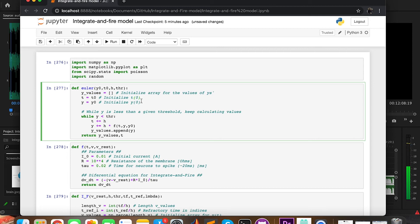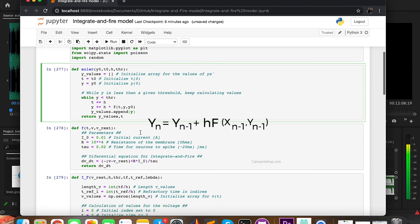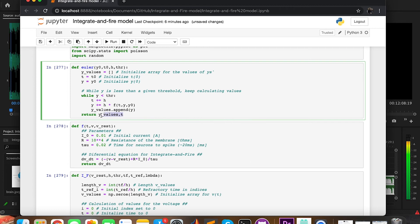The first thing we are going to do is to initialize the array y, and then set our current t0 and y0 as t and y. What we want is to run Euler's method as long as y is less than our threshold, which is minus 40 mV. So to do that, we make use of a while and just implement the formula. And what we are going to return is the array y values, and t, the time, which I'm going to explain later.